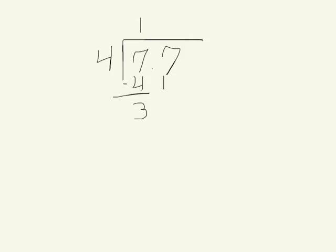When we combine our 3 ones with the 7 tenths, that makes 37 tenths. I know that 4 will go into 37 tenths 9 times. 9 times 4, 9 tenths times 4, is 36 tenths. And that leaves me with 1 tenth.